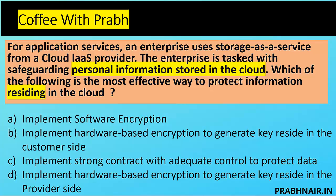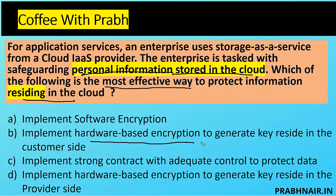Next coffee shot: an enterprise uses storage as a service from a cloud ISP. The enterprise is tasked with safeguarding personal information stored in the cloud. What is the most effective way to protect information residing in the cloud? Option A: implement software encryption. Option B: implement hardware-based encryption to generate the key, with the key residing on the customer side. Option C: implement a strong contract with adequate controls. Option D: implement hardware-based encryption but with the key residing on the provider side.